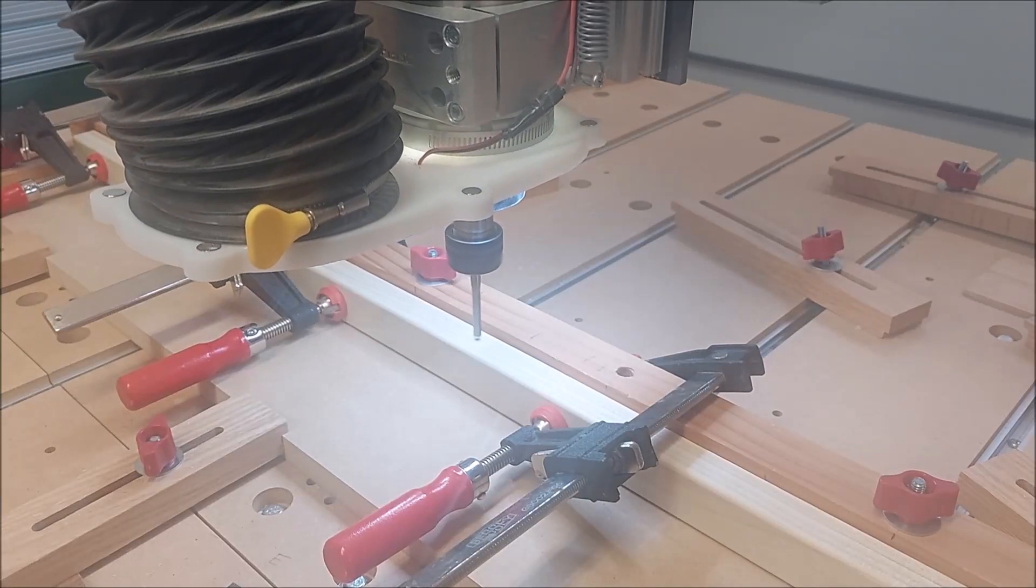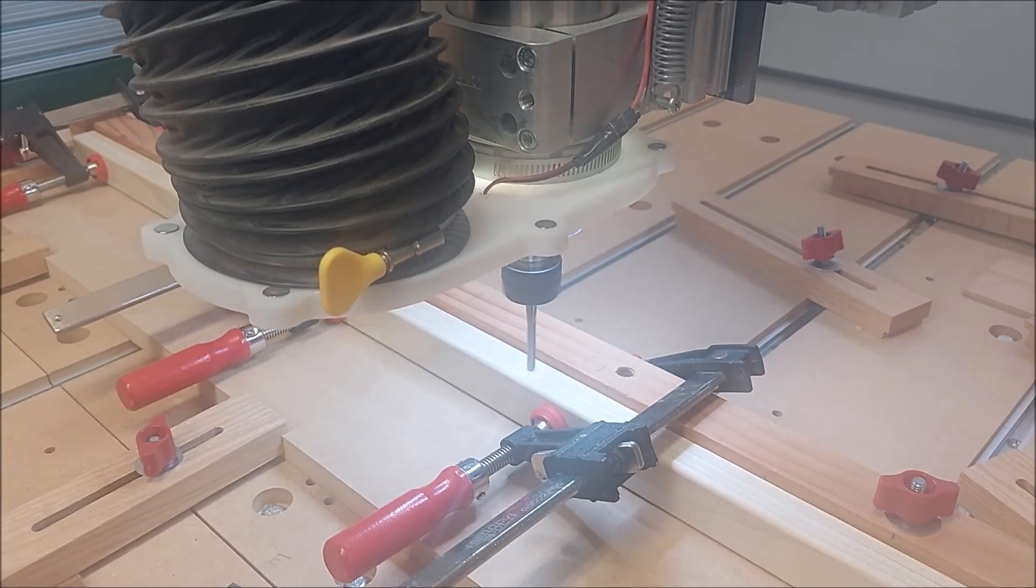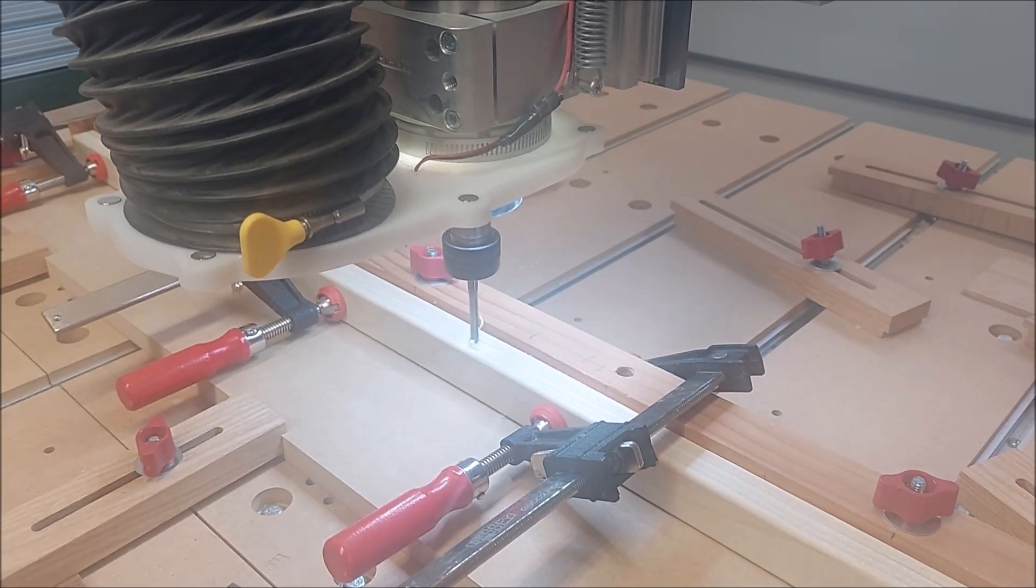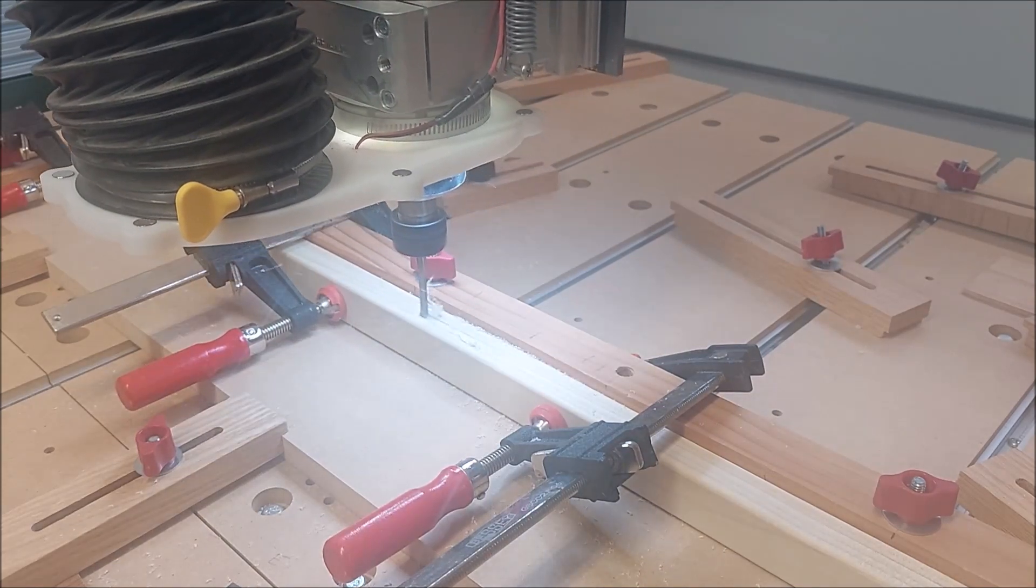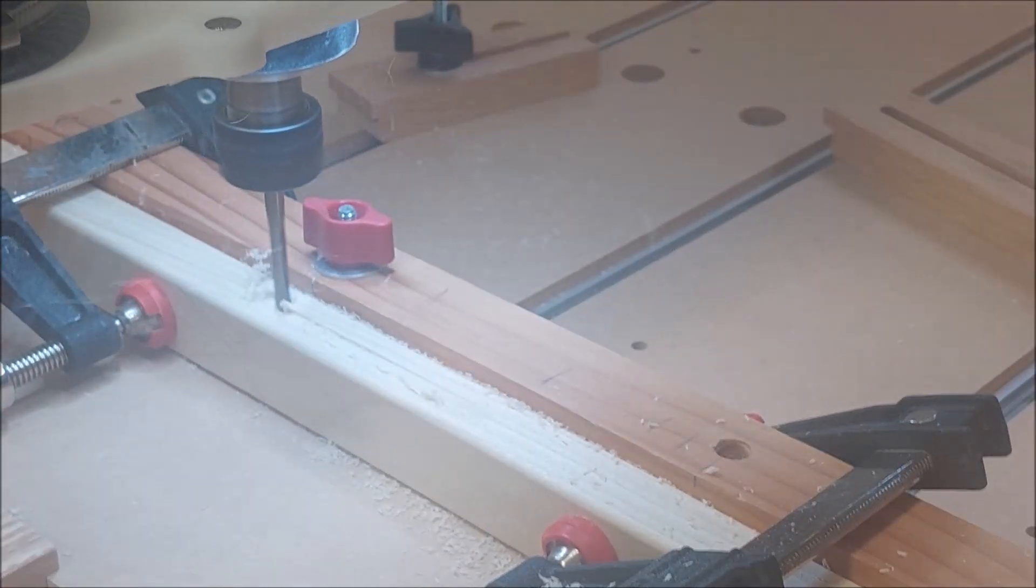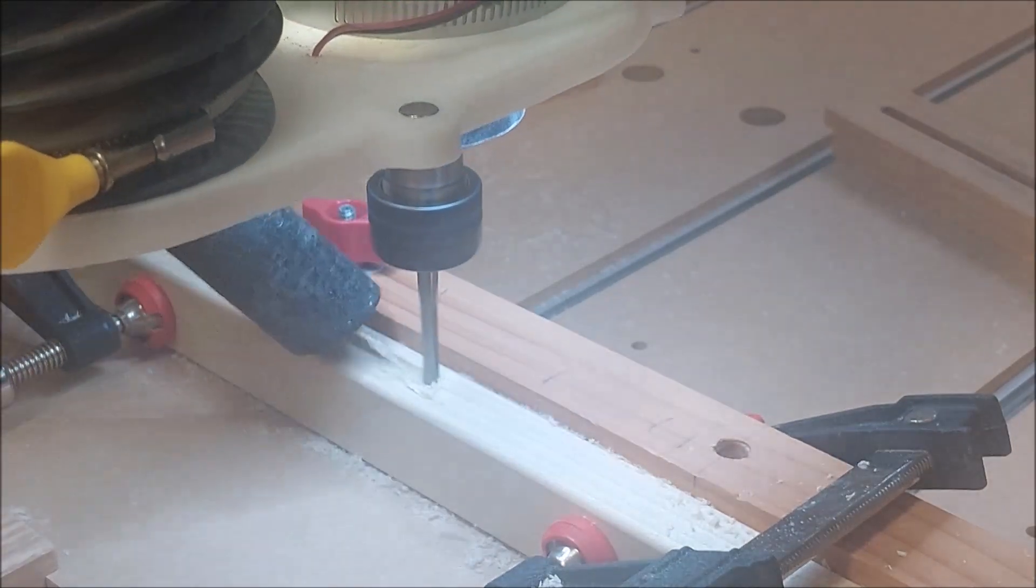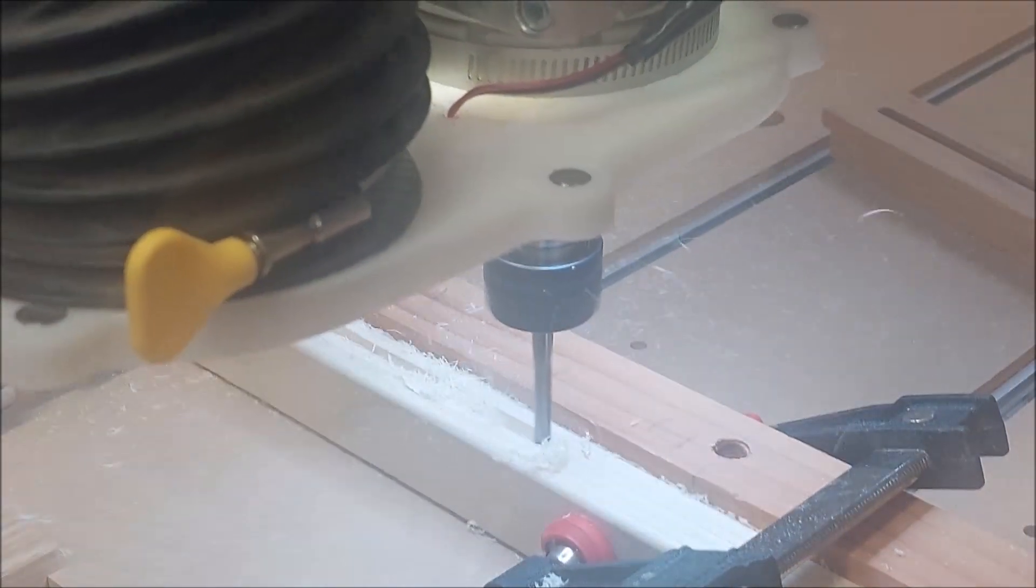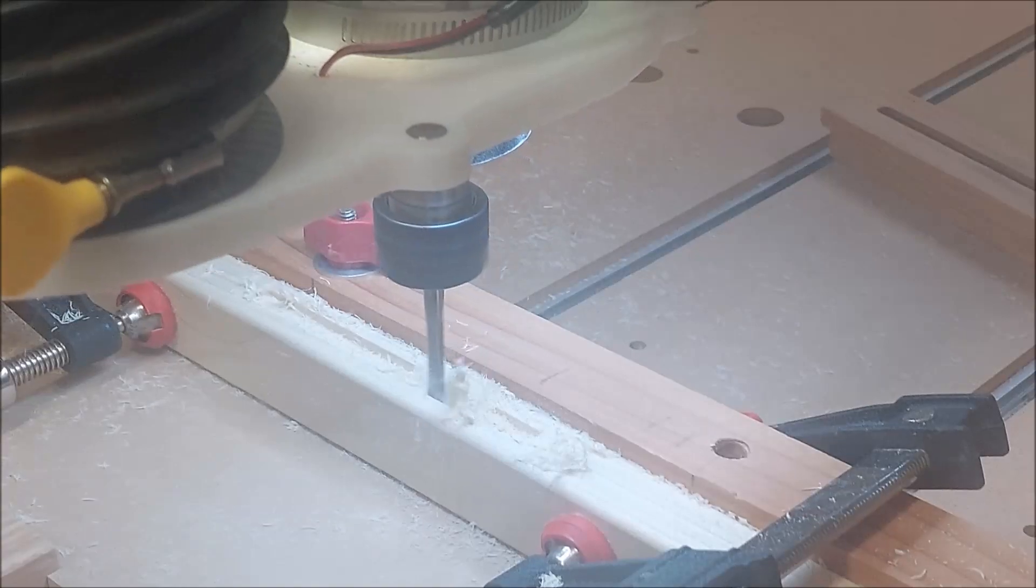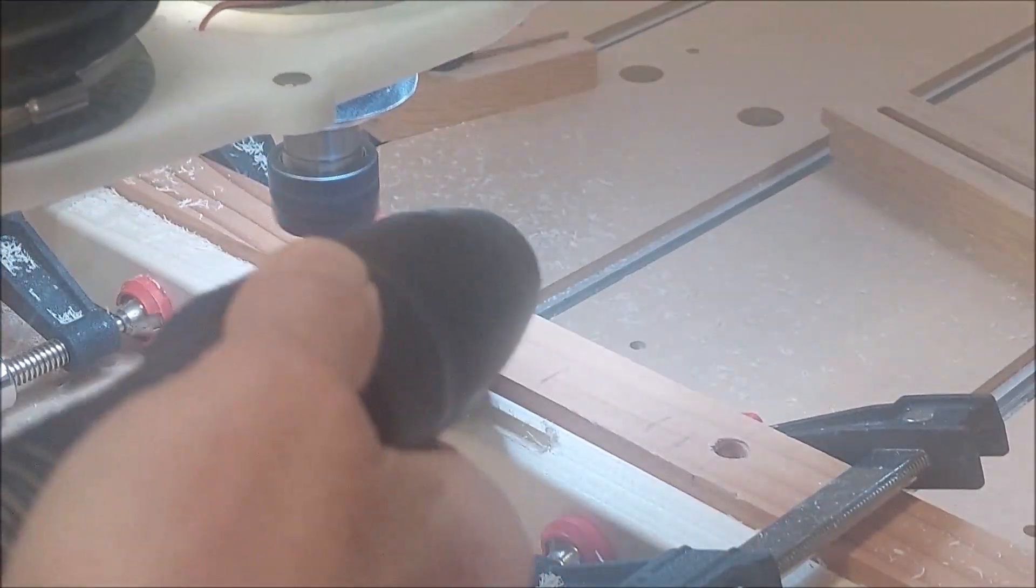The slots in the slats were routed on the CNC using a quarter inch end mill. The slot dimensions were different for each slat, so a separate toolpath had to be created for each one separately.